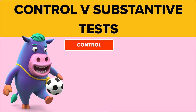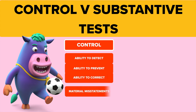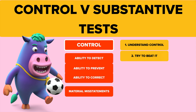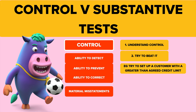Back to control tests. Control tests are making sure that the controls detect, prevent, and correct any material misstatements occurring in the accounts. For us as auditors, when it comes to control tests, we need to understand the control and then try to beat it — that's why it's a control test. Try to beat the control, and hopefully you won't be able to, and you think, good, the control is working. For example, try to set up a customer with a greater than agreed credit limit — the system should say no, and you know it's working. Or you could observe somebody setting up a client and making sure they give the correct, authorized credit limit.